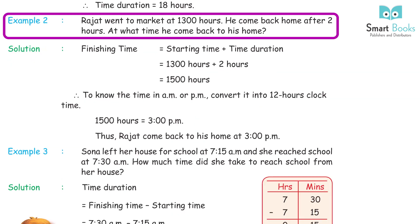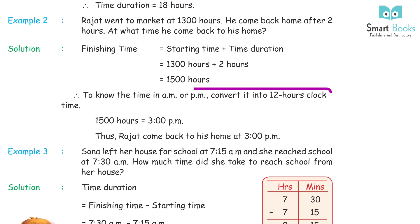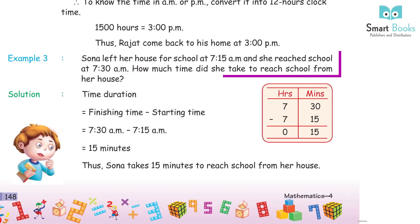Example 2: Rajat went to market at 1300 hours and came back home after 2 hours. At what time did he come back? Solution: Finishing time = Starting time + Time duration = 1300 + 2 hours = 1500 hours. Converting to 12-hour clock: 1500 hours = 3 PM. Rajat came back home at 3 PM.